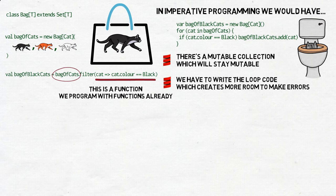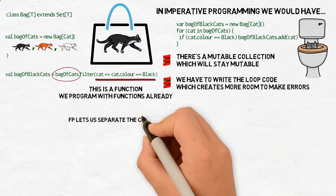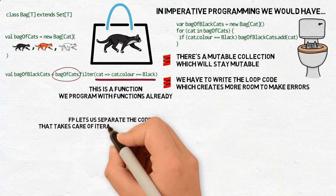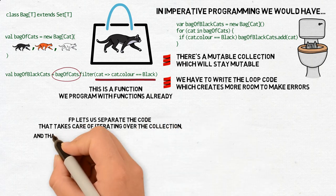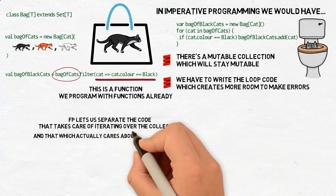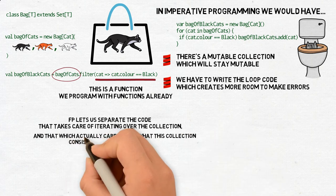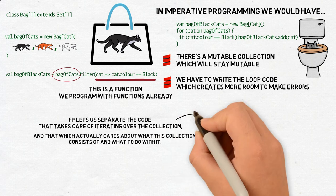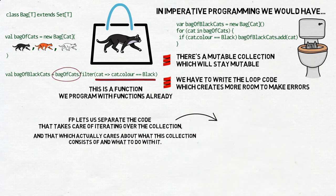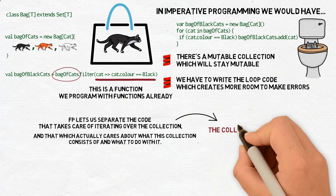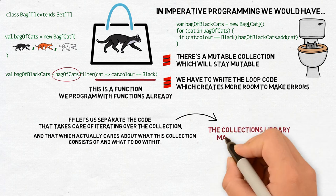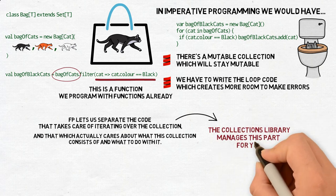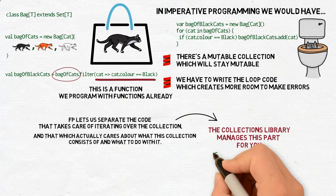Functional programming lets us separate the code that takes care of iterating over the collection and that which actually cares about what this collection consists of and what to do with it. The first part doesn't care if it's a bag of cats or dogs, or maybe something completely different, as long as it is a collection of elements which can be filtered. This way, we can put the implementation of the filter method in the collections library and never think of it again.